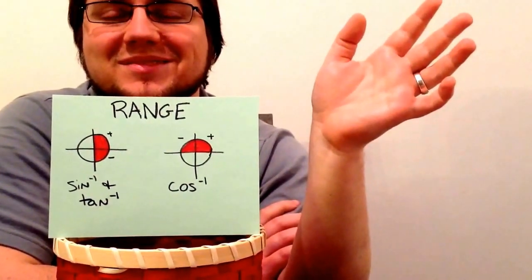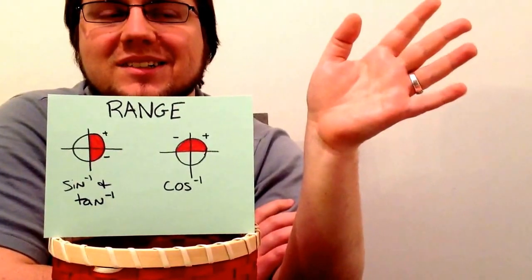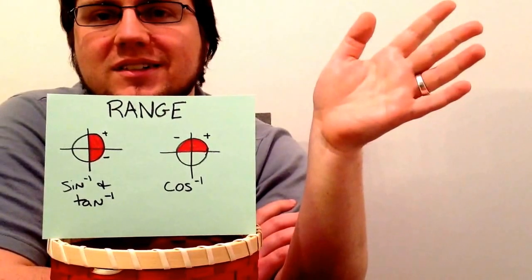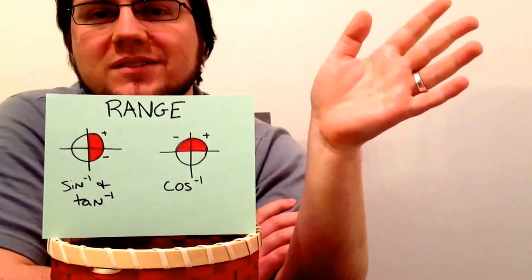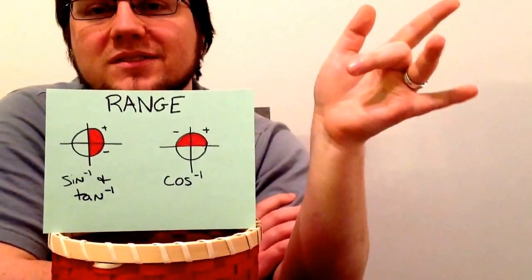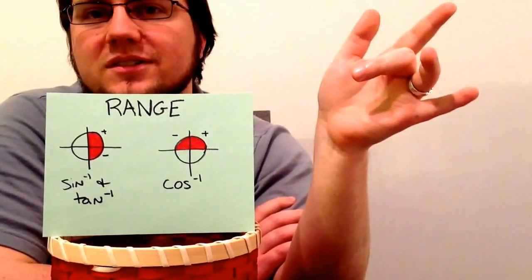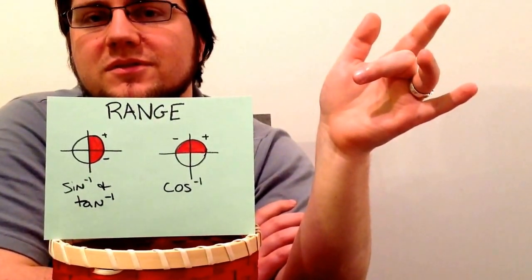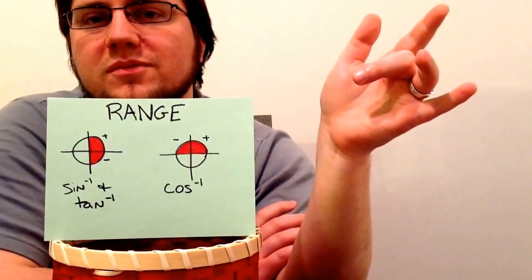So the first one we're going to do is the inverse sine of root 2 over 2. Which finger can we put down so that I've got 2 below my finger, and then I've got my palm of 2? Indeed that is the 45 finger, so since root 2 over 2 is positive my answer is 45 degrees, which is also π over 4 in radians.